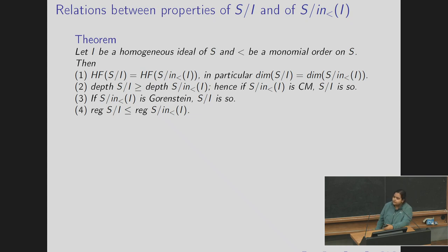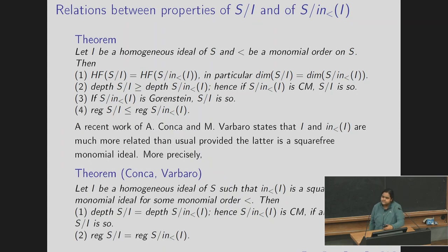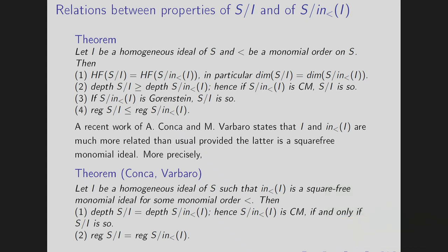Again this is the same true for Gorenstein case and for the regularity, regularity of S mod I is less than equal to regularity of S mod initial ideal. A recent result of Conca and Barbaro says that I and initial ideal are much more related provided that initial ideal is a square free monomial ideal. Precisely they prove that if I is a homogeneous ideal and in(I) is square free monomial ideal then the depths are actually equal, that is S mod I is Cohen-Macaulay if and only if S mod initial ideal is Cohen-Macaulay and the regularities are also same.